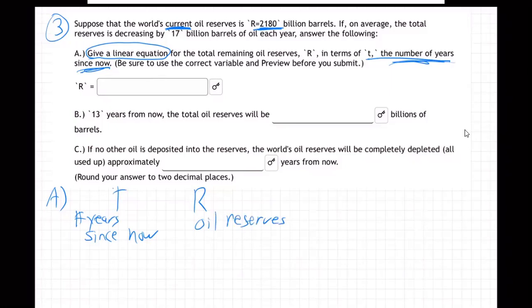So basically, if they're saying we start at 2180 and it's decreasing by 17 billion barrels of oil each year, that's our equation right there. It's minus 17T plus 2180. Done. That quick. Does everybody see that? Is that confusing?